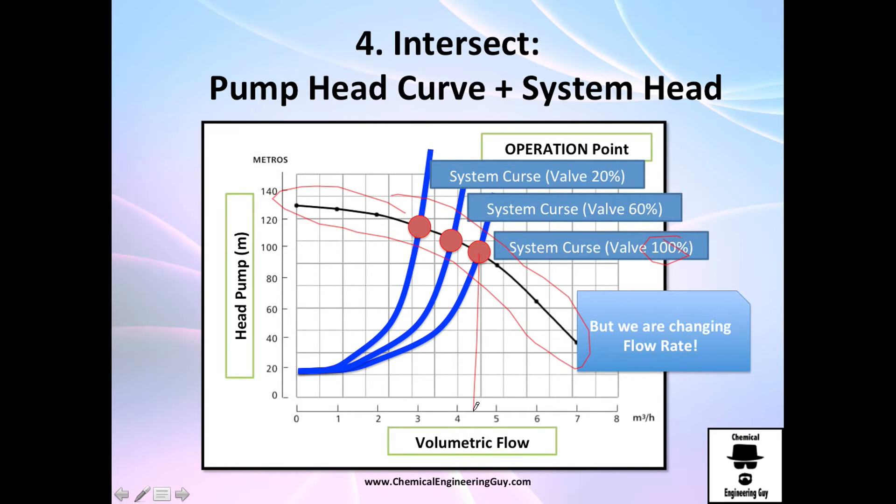For example, 100% will give you 5.5 cubic meters volumetric flow rate, 60% closed or open will give you 3.8 cubic meters, and 20% will give you only 3 cubic meters volumetric flow rate. Hopefully it makes sense to you guys that as we increase friction, we are going to deliver less volumetric flow rate with the same pump.